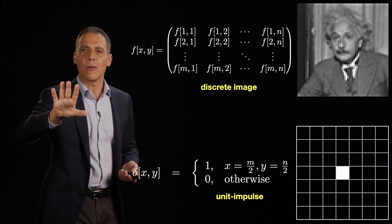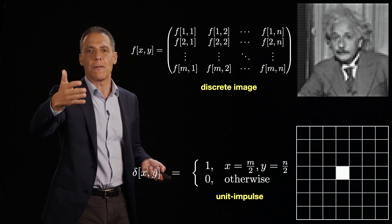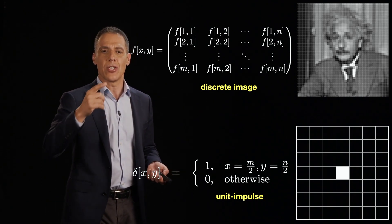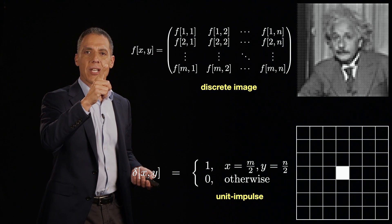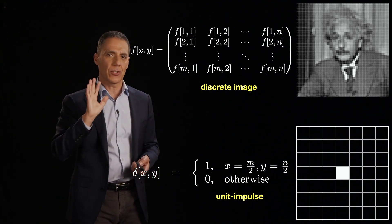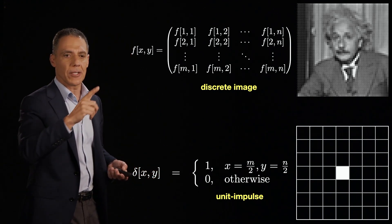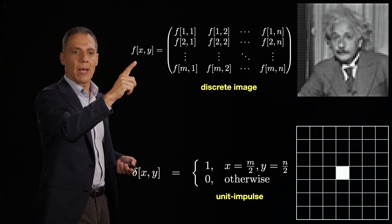I'm going to do everything in grayscale. Color is just a bunch of these packed together. Think about a color image as three of these discrete time images: red, green, and blue. For our purposes, we're going to treat everything as grayscale, and then we just operate on the color channels separately. So what is a discrete time image?